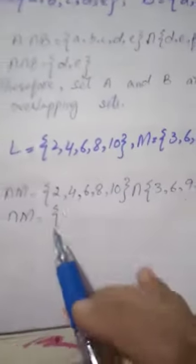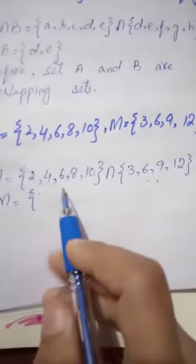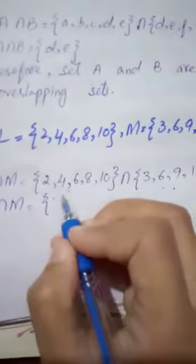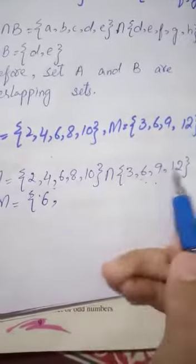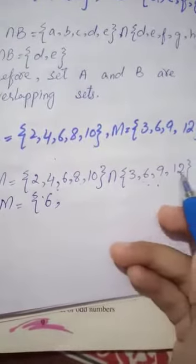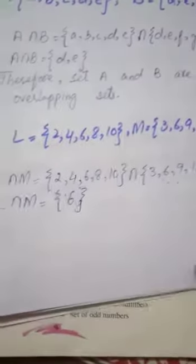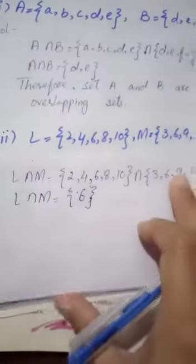Now let's see what elements are common. 2 doesn't exist, 4 doesn't exist, 6 doesn't match... 6 matches. 8 doesn't match, 10 doesn't match. 9 and 12 don't match. So this means only 6 is common. So one is common.